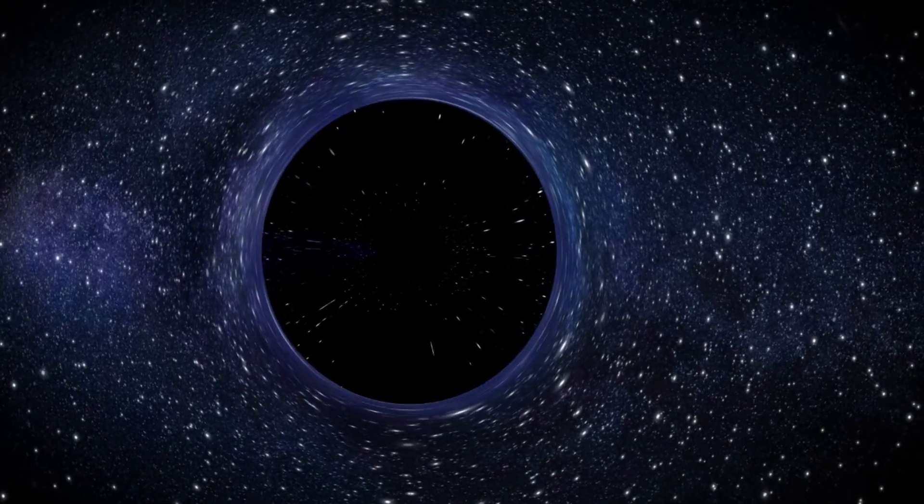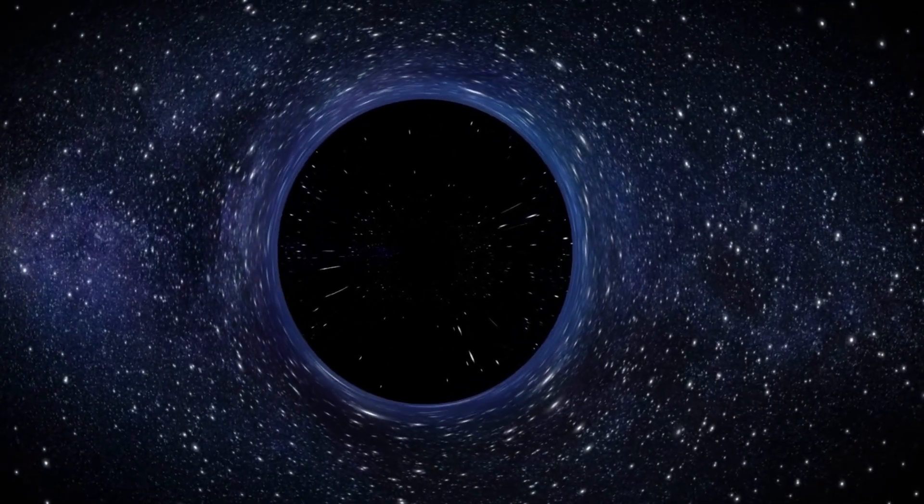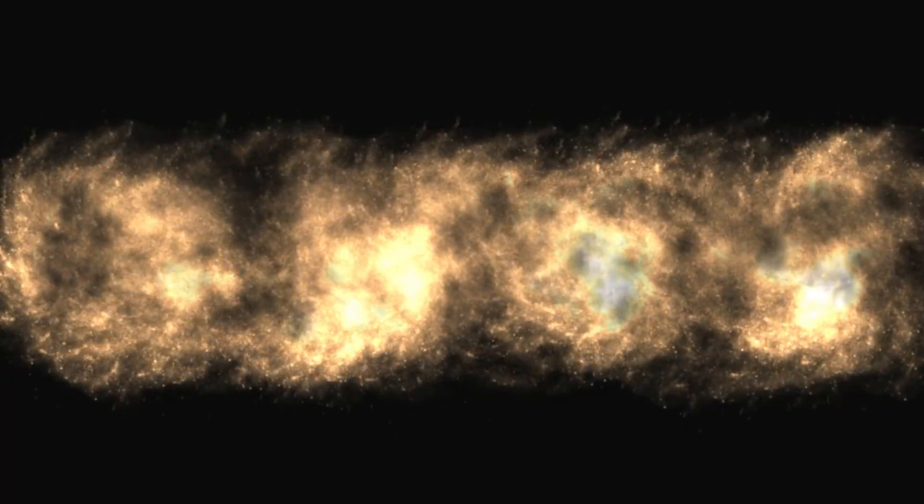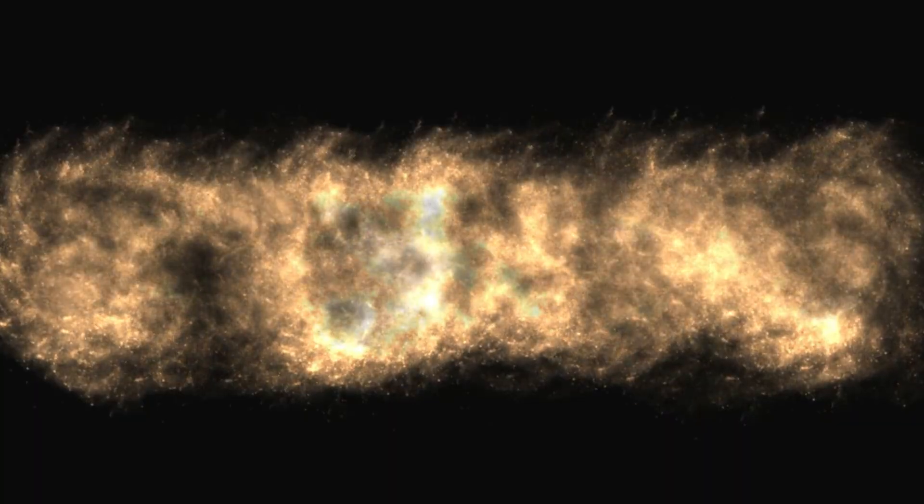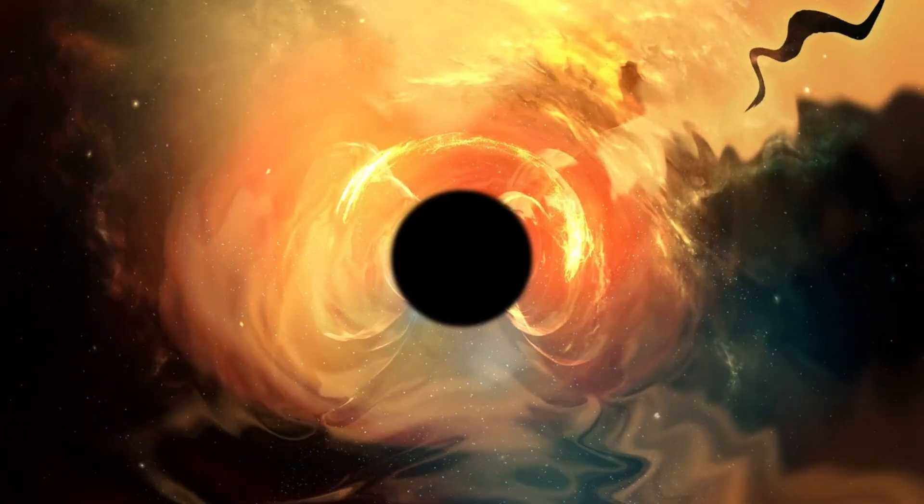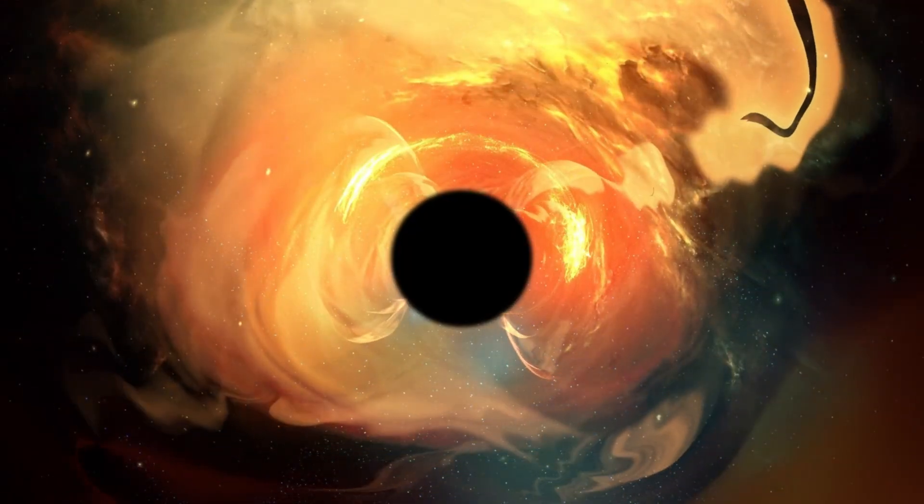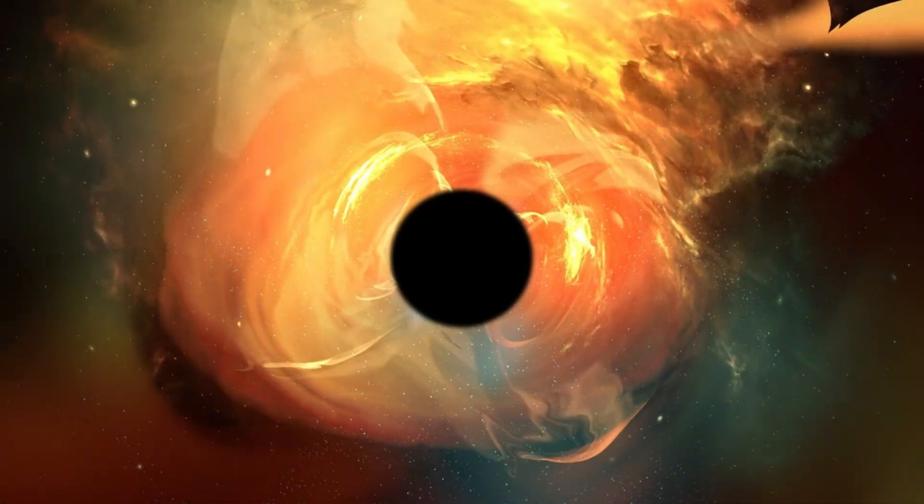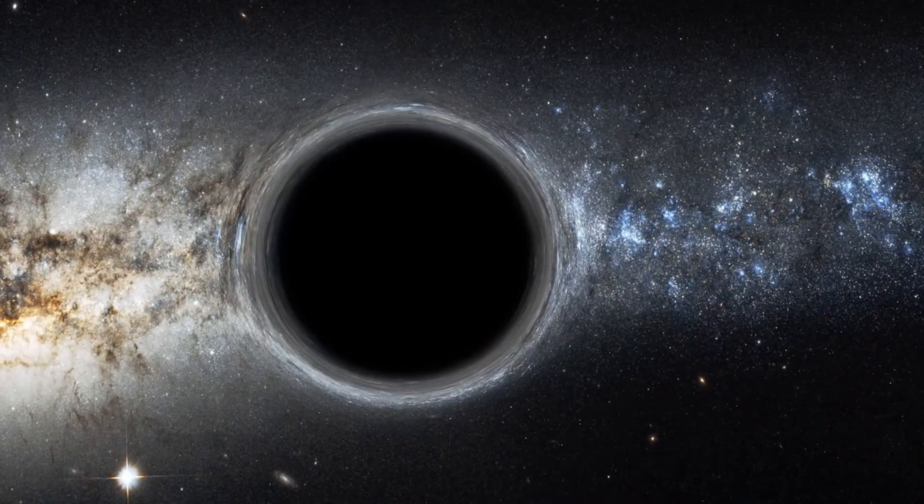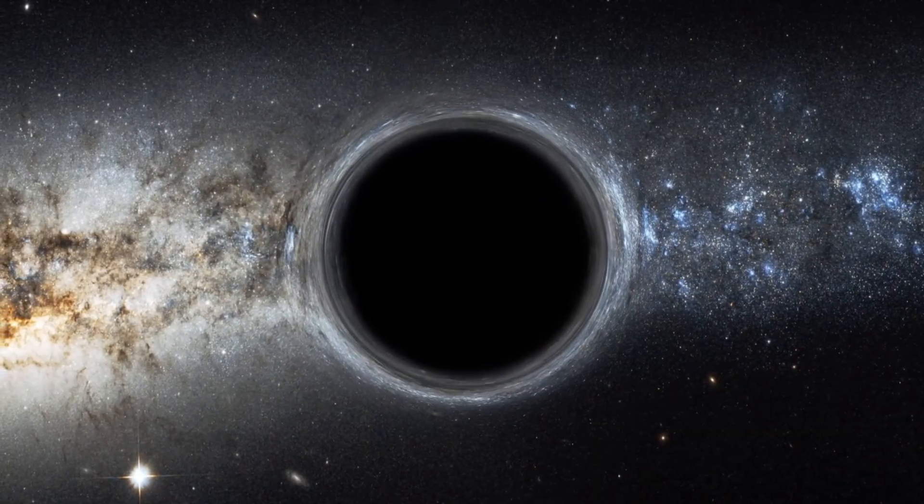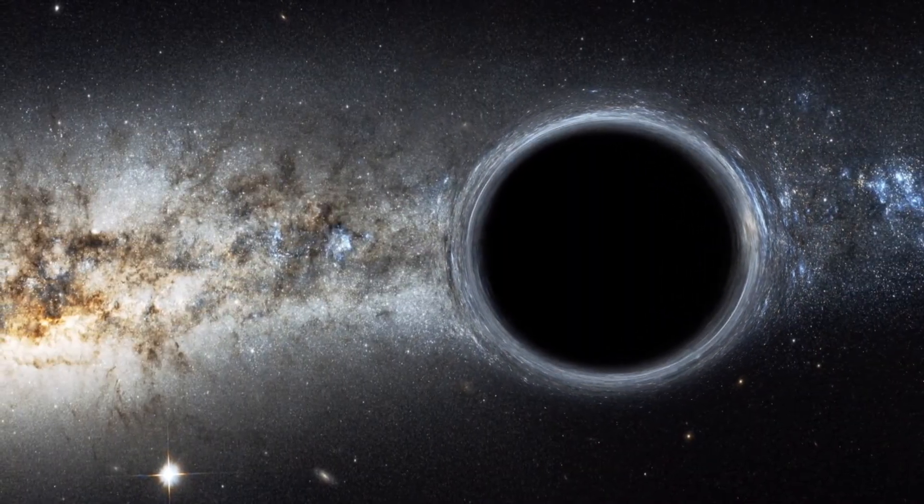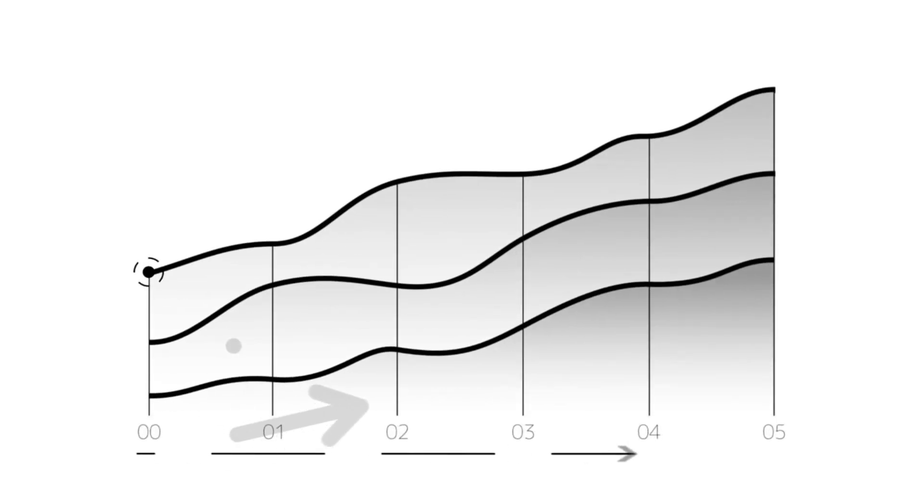Scientists are now scrambling to explain how such a thing could exist. One leading idea is that the early universe might have been a kind of all-you-can-eat buffet for black holes. Right after the Big Bang, the universe was much denser than it is now, filled with vast clouds of hydrogen and helium gas. These clouds could collapse under their own gravity with remarkable speed, feeding black holes with an abundance of raw material. Maybe some black holes got a head start in this rich environment, ballooning to massive sizes in just a few hundred million years.